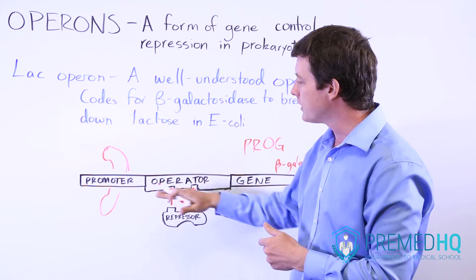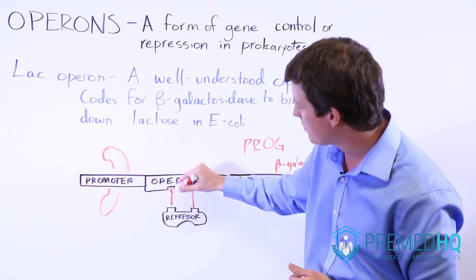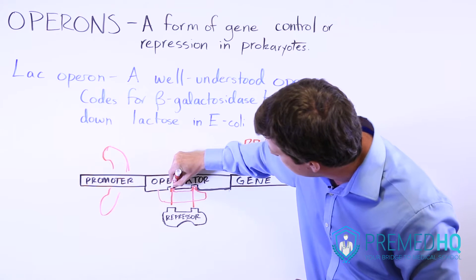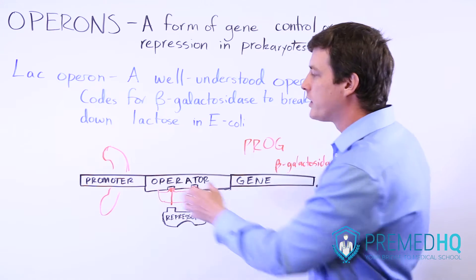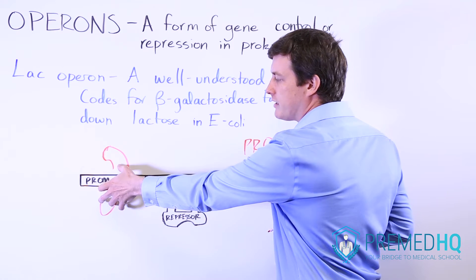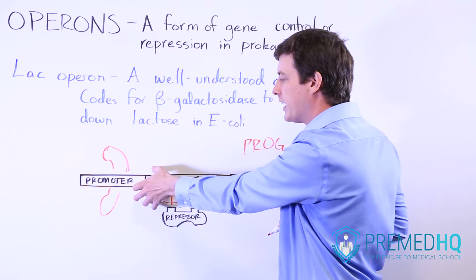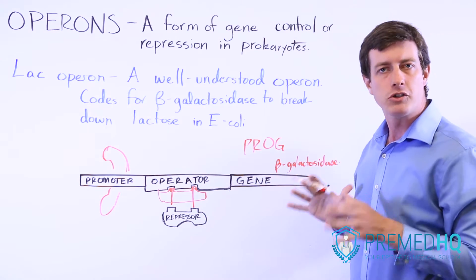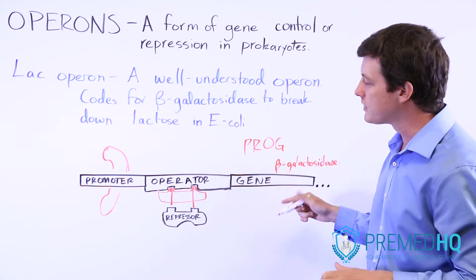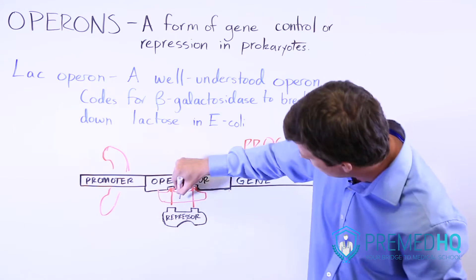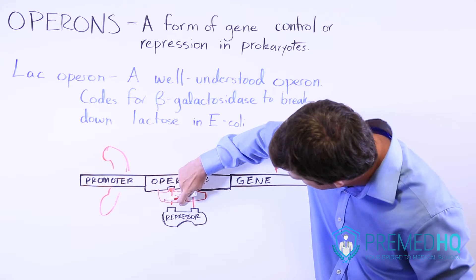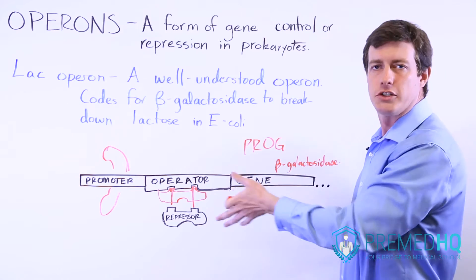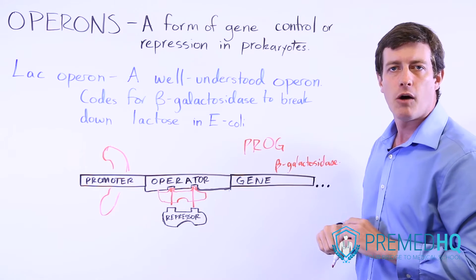While the repressor is bound and occupying the operator space, the RNA polymerase on the promoter is simply unable to pass through the operator and reach the area where it transcribes the gene. So the normal state — with the repressor in its original form — is that you are not transcribing the gene.